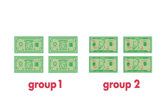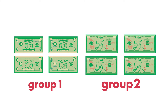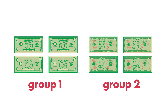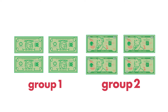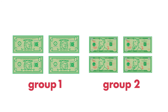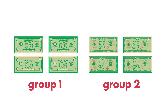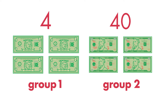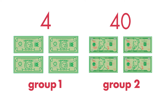Which would you rather have? Both groups have the same number of bills. One group has $1 bills, the other has $10 bills. Four tens are worth more than four ones. This group has a value of $40. The other group is worth $4.